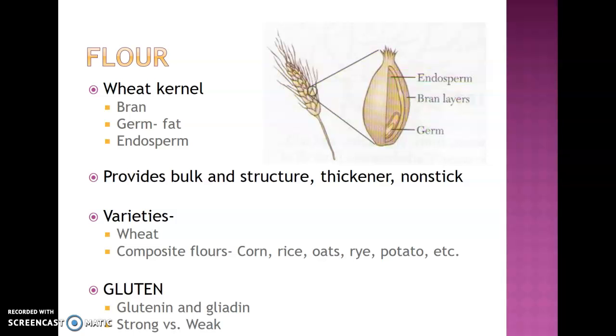A weak flour, then, would be like your cake flour. Think of how soft your cake is versus how hard and crusty, crunchy your French bread could be. So with a soft or weak flour, you end up having one that doesn't have as much protein and doesn't become as tough of a product. That's important when you're looking at your varieties of flours and what to use.